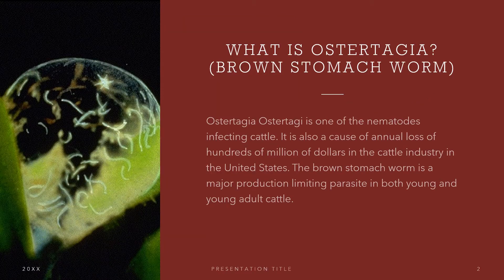What is Ostertagia? It is also known as the brown stomach worm. Ostertagia ostertagii is one of the nematodes infecting cattle. It is also a cause of annual loss of hundreds of millions of dollars in the cattle industry in the United States. The brown stomach worm is a major production-limiting parasite in both young and young adult cattle.